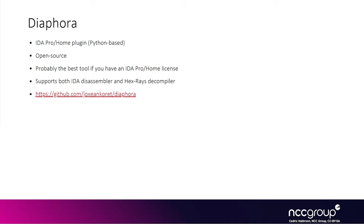An interesting thing is that diffing x86 versus ARM 32-bit can be challenging because ARM 32 has many conditional instructions, so the actual function graph looks significantly different. If you want to diff x86 and x64, they're relatively similar so their flow graphs at the assembly level are quite similar. With Diaphora, you can actually do binary diffing between two different architectures because at the decompiler level the C code is very likely to be the same — and it has been helpful when diffing x86 and x64.